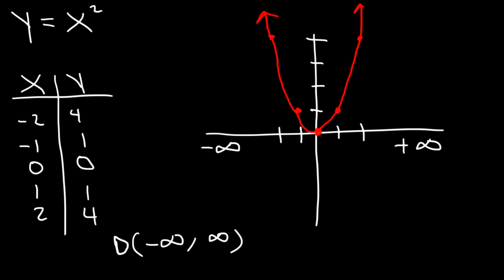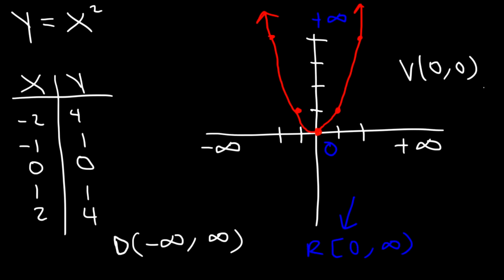Now the range has restrictions. The range represents all of the y values. The lowest y value is 0, and the highest is infinity. So therefore, the range is from 0 to infinity. And since 0 is included, we're going to use brackets. For infinity, you should always use parentheses. The vertex for this graph is the origin (0, 0). The axis of symmetry is basically the x-coordinate of the vertex — it's x equals 0.